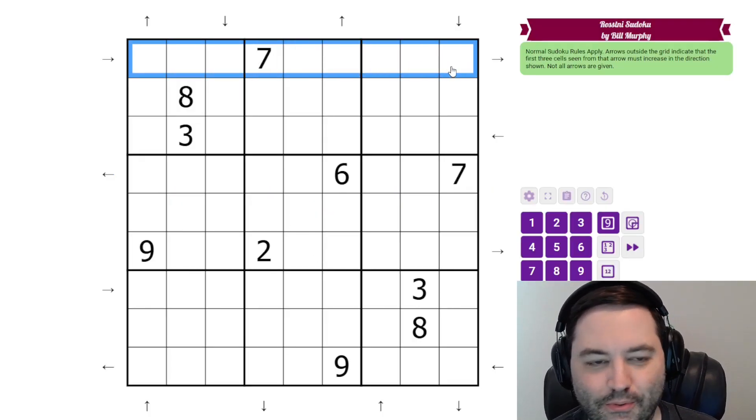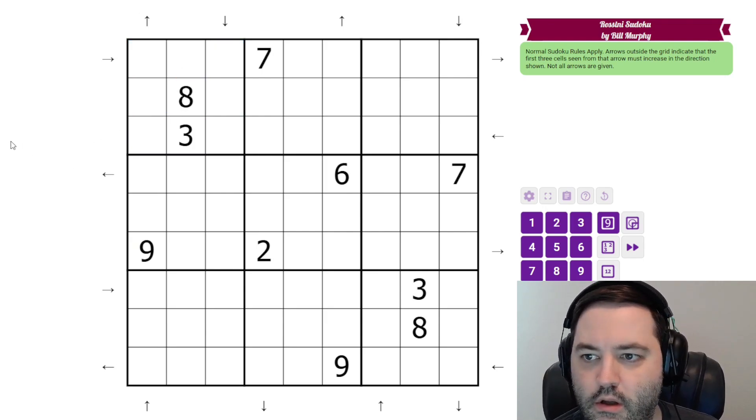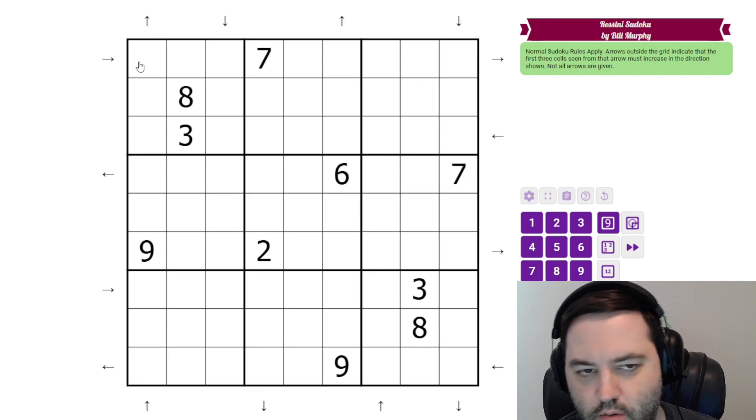Normal Sudoku rules: one to nine in each row, column, and three by three box. Additionally, we have some arrows outside the grid, and if there is an arrow in a column or row, they tell us that the digits in the first three cells in that direction, or away from that side of the grid, must increase in the direction of the arrow.